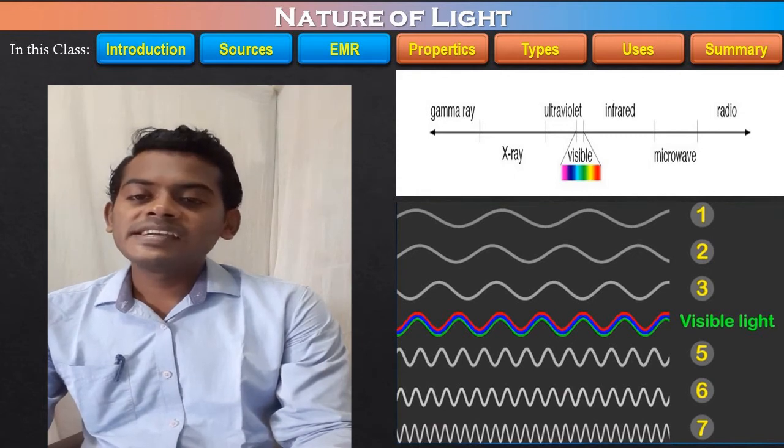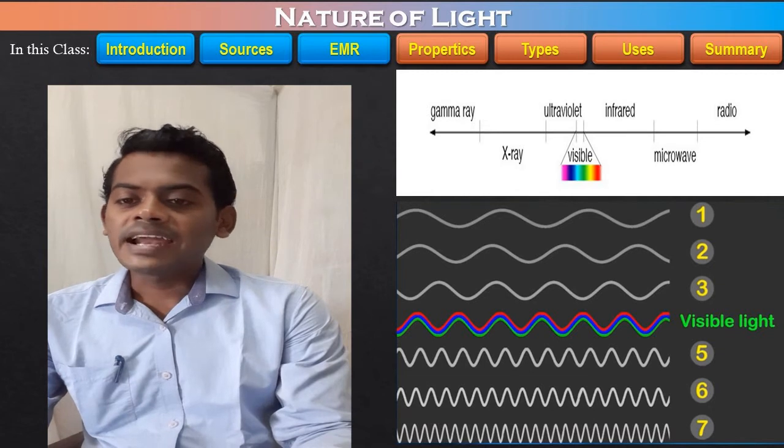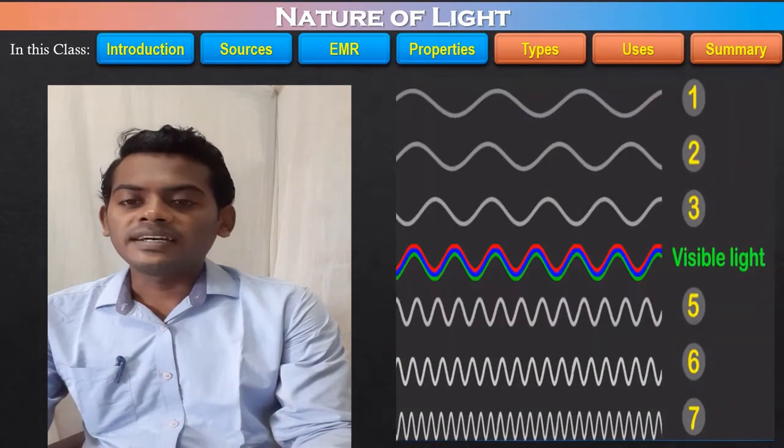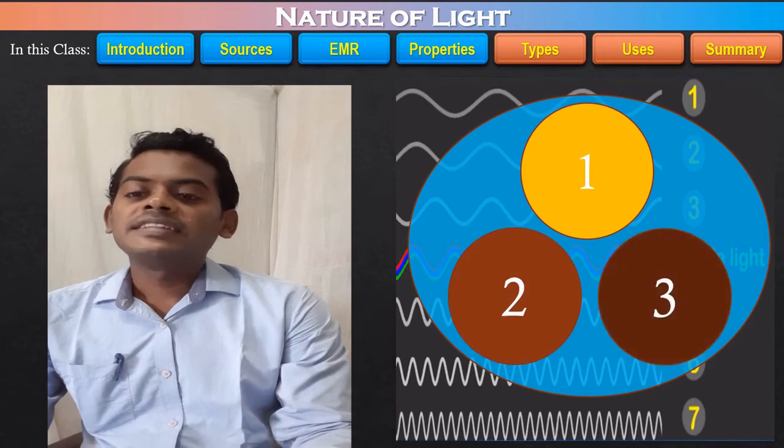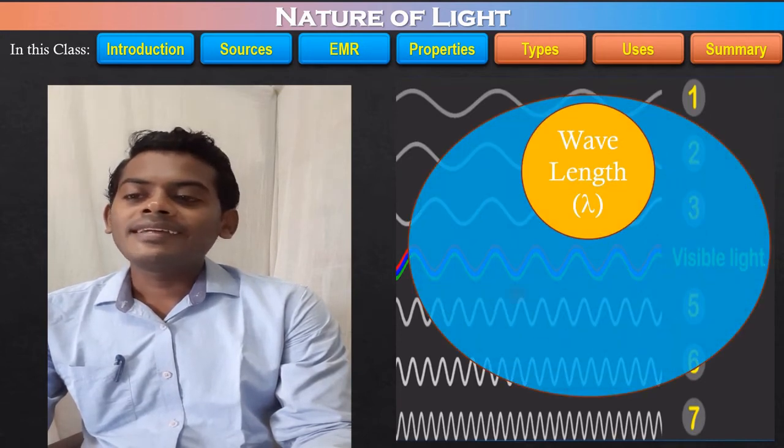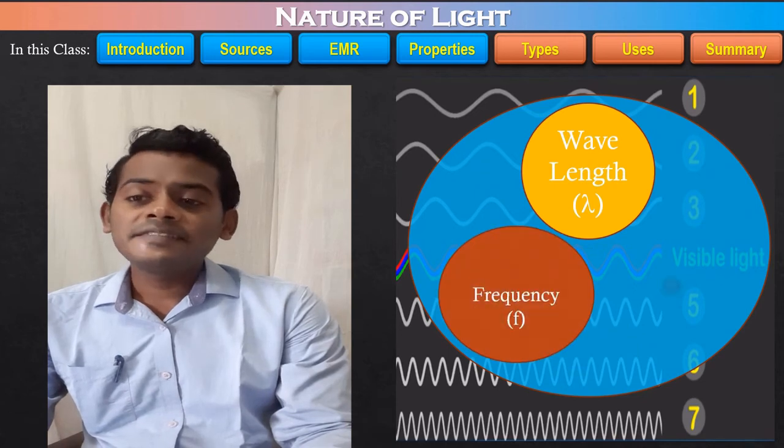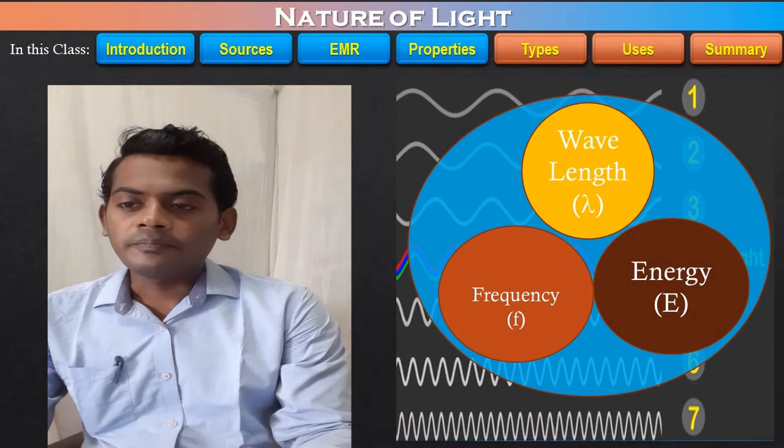Similarly, this radiation although part of the same family of light are slightly different from one to another. This difference is due to three factors. These three factors are wavelength, frequency and energy. These three factors are different for each member of the electromagnetic spectrum.